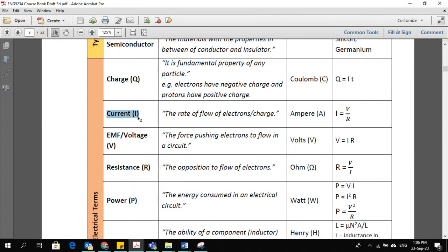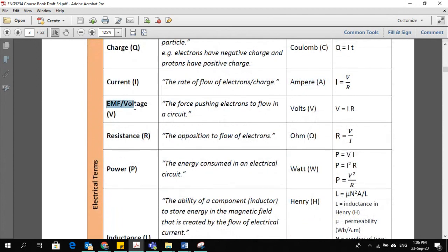Current, which is symbolized by the letter I. Current is the rate of flow of electrons. This is the formula to find that. You are aware of it, this is the famous Ohm's law: that current is directly proportional to the voltage and at the same time the current is inversely proportional to the resistance. Unit of current is amperes.